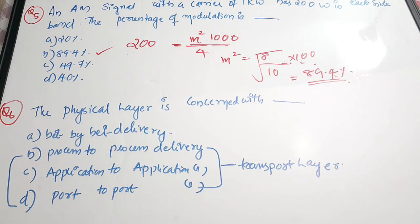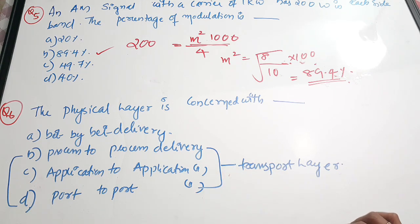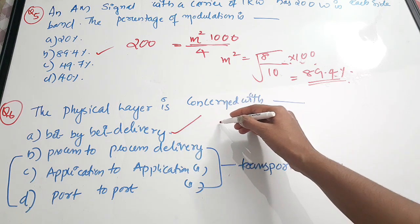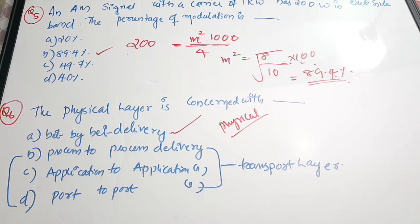Question 6 is from computer networks. The physical layer is concerned with: A) bit-by-bit delivery, B) process-to-process delivery, C) application-to-application delivery, D) port-to-port delivery. Process-to-process and port-to-port delivery are controlled by the transport layer. Application-to-application delivery is controlled by the application layer. Bit-to-bit delivery is controlled by the physical layer. The answer is option A.